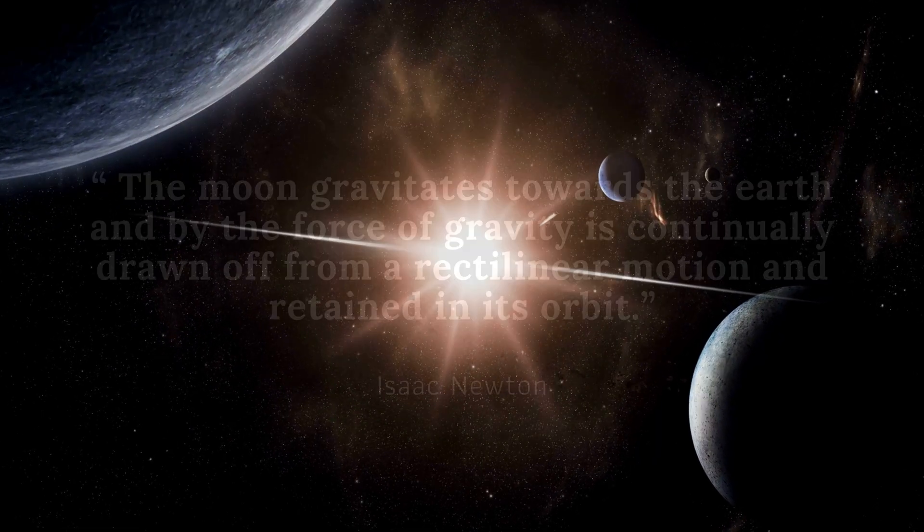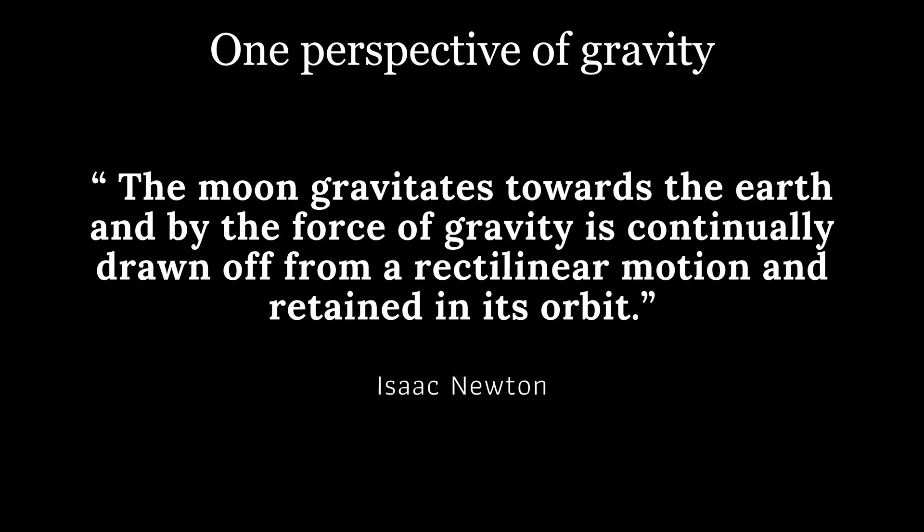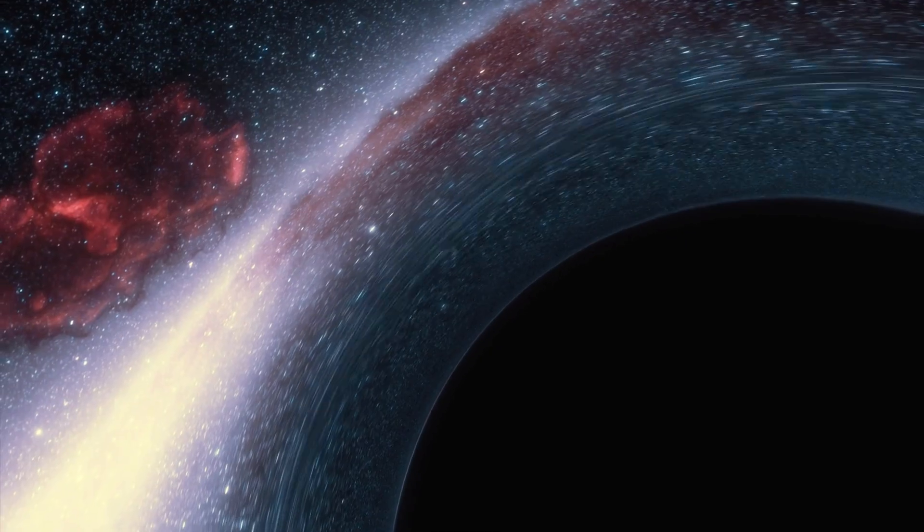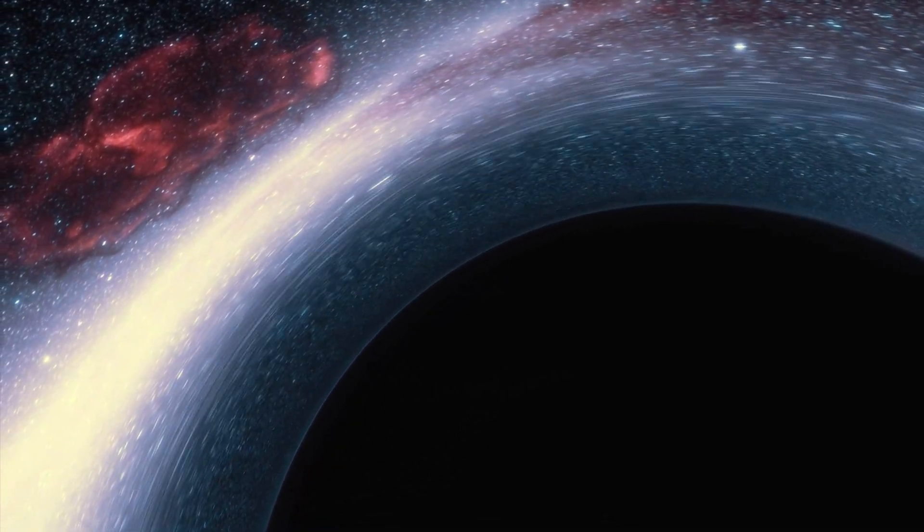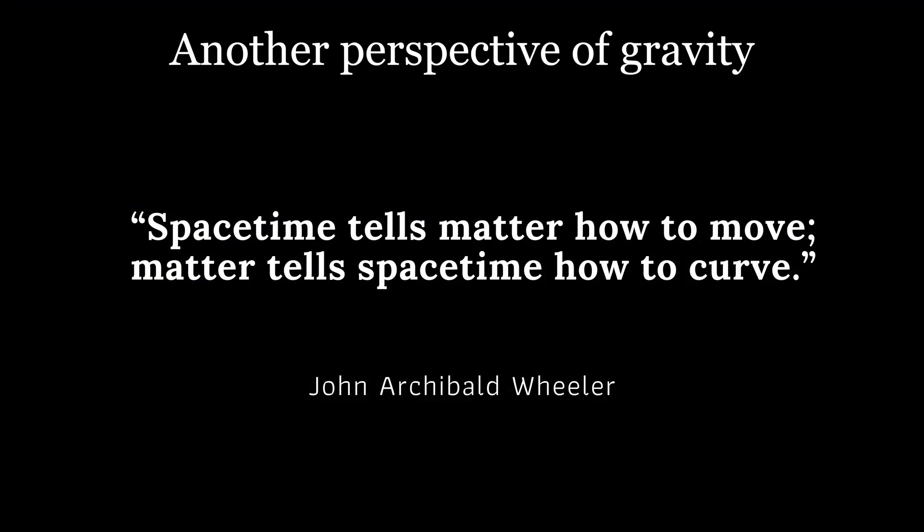As Isaac Newton said, the moon gravitates towards the Earth and by the force of gravity is continually drawn off from a rectilinear motion and retained in its orbit. Physicist Archibald Wheeler summarized as space-time tells matter how to move. Matter tells space-time how to curve.